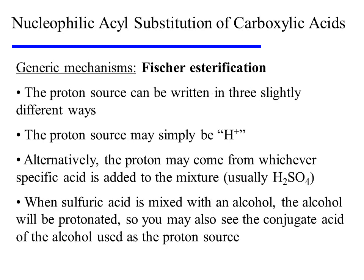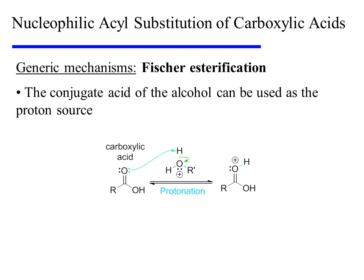It's useful to note that the proton source can be written in three slightly different formats. The proton source may simply be written as H+. Alternatively, the proton may come from whichever specific acid is added to the mixture — this is usually sulfuric acid. When sulfuric acid is mixed with an alcohol, the alcohol will be protonated, so you may also see the conjugate acid of the alcohol used as the proton source. It was this last option that was employed during the protonation of the carboxylic acid, represented here as the conjugate acid of the alcohol used in the reaction.